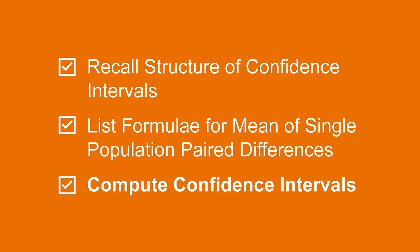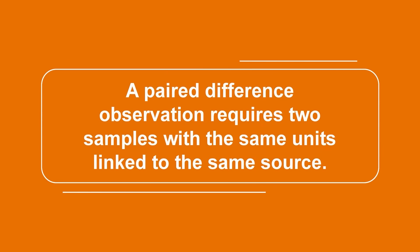Before we do any of this, let's specify what it means to have a paired population difference. A paired difference observation requires two samples with the same units linked to the same source. These two samples are then subtracted from each other to provide a single observation corresponding to the difference between these two samples.